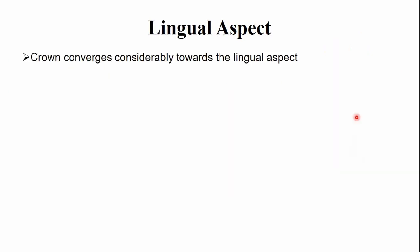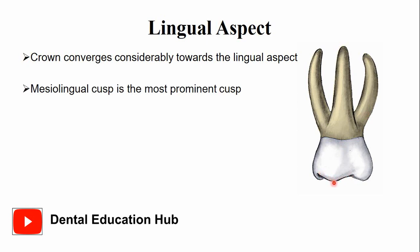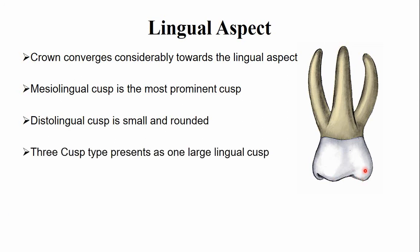From the lingual aspect, the crown converges towards the lingual side, so the mesiodistal width is less on the lingual side, and part of the mesial and distal surfaces are visible from this view. The mesial lingual cusp is the most prominent cusp, while the distal lingual cusp is short and rounded — and sometimes the distal lingual cusp is missing, in which case only three cusps are present: one lingual and two buccal.